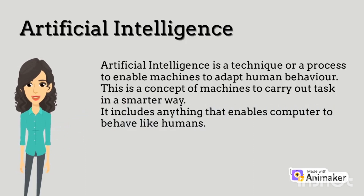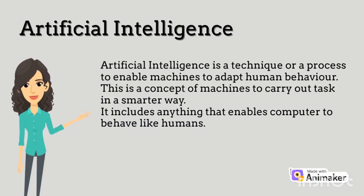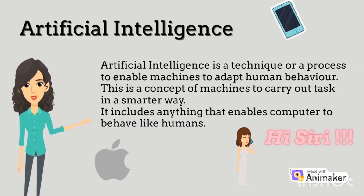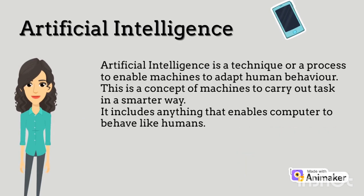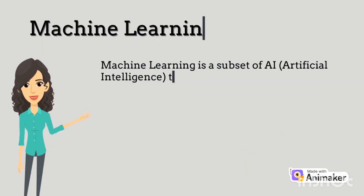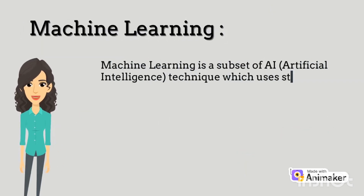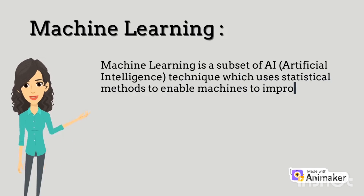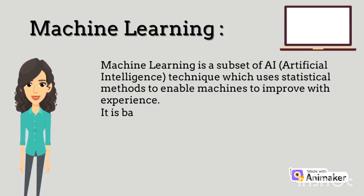to behave like humans — for example, our communication with Siri on an iPhone. Machine learning is a subset of AI that uses statistical methods to enable machines to improve with experience.